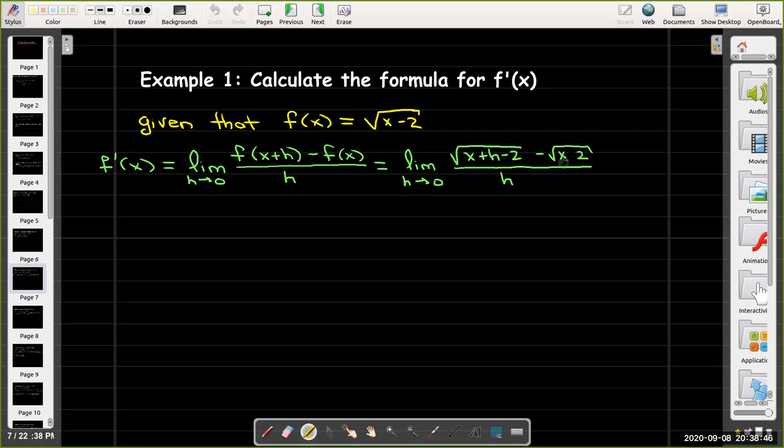We see that we're going to have a quotient where in the numerator, we have two radical expressions, and they're subtracted from each other. So in that case, if we reach into our algebra toolbox, the tool we would like to use in order to simplify this expression would be multiplying by the conjugate. So we multiply top and bottom by radical x plus h minus 2 plus radical x minus 2.